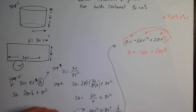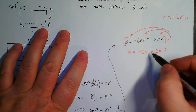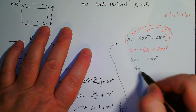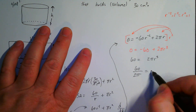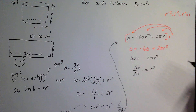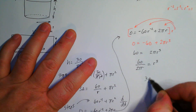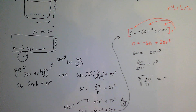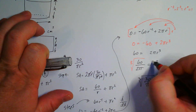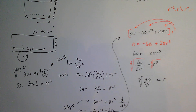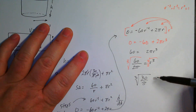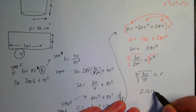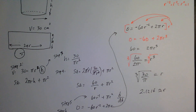Divide both sides by 2π to get r³ equals 30 over π. Then take the cube root of both sides — the cube root cancels the cube — so r equals the cube root of 30 over π. Plugging that into a calculator gives approximately 2.1216, which is our radius.